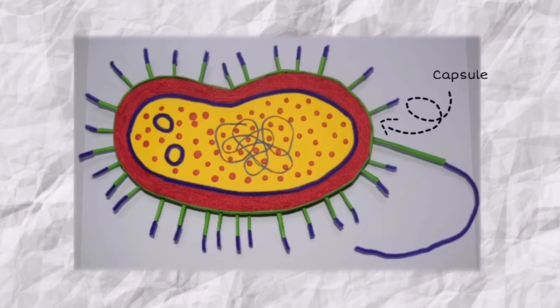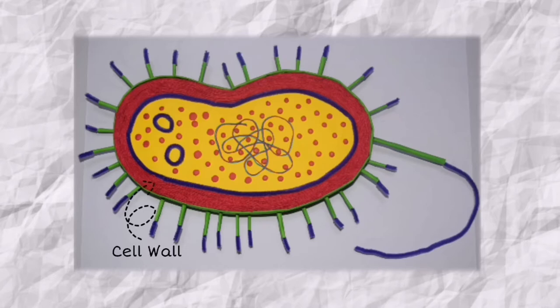The capsule. It keeps the bacterium from drying out and protects it from phagocytosis by larger microorganisms. The cell wall. It gives the cell its shape and surrounds the cytoplasmic membrane, protecting it from the environment.